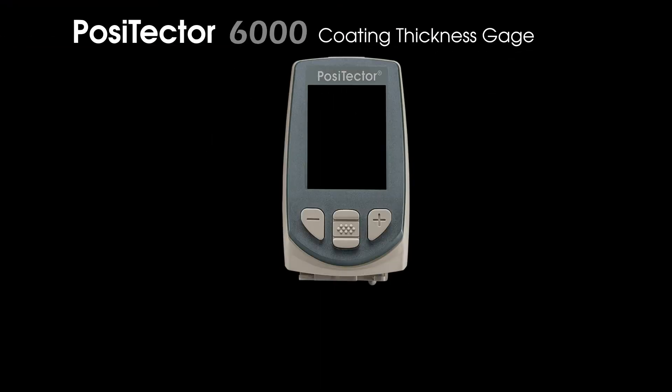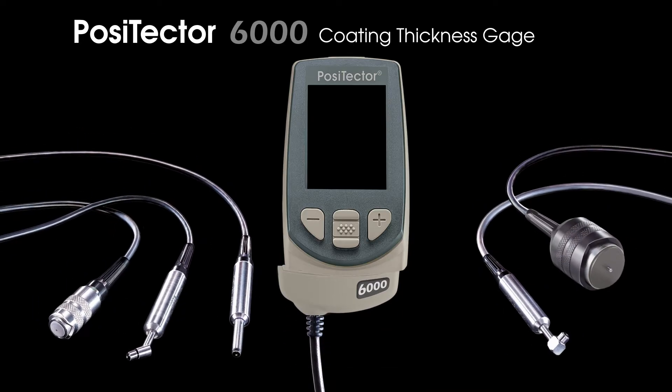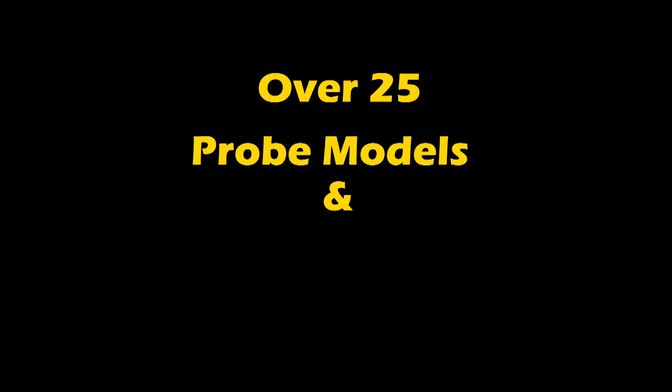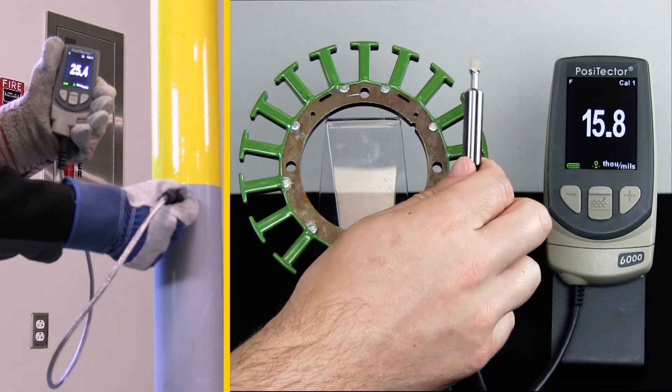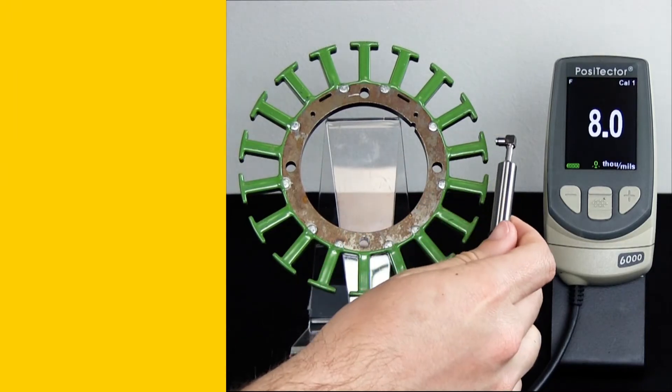The Positector 6000 is DeFelsko's most popular and advanced solution for measuring coating thickness. With over 25 probe models and advanced functionality like memory, statistics, scanning, and powerful recording software, there is a solution for almost any application.